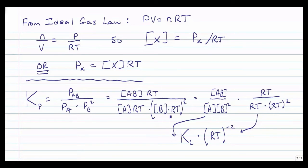If I separate out the concentration aspect and the RTs, I get AB2 over the concentration of A divided by the concentration of B squared, which is just K sub C. And then I have this whole big mess of RTs, and these guys cancel out, and I'm left with 1 over RT squared, which is RT to the minus 2.